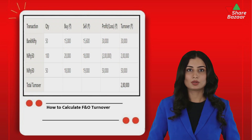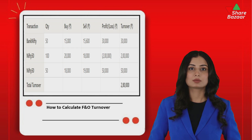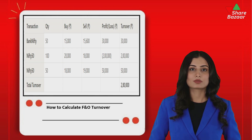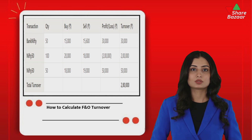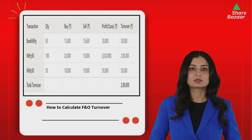To calculate F&O turnover, add the positive and negative differences in all trades, include the premium received from selling options, and account for reverse trade differences. Futures turnover equals absolute profit, while options turnover equals absolute profit plus premium.